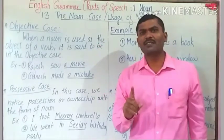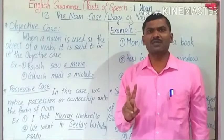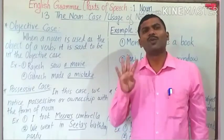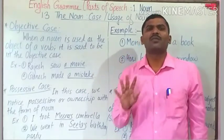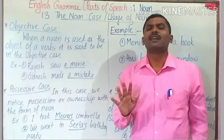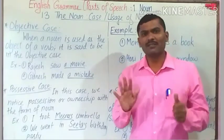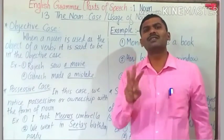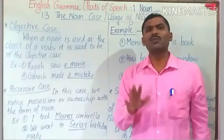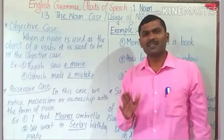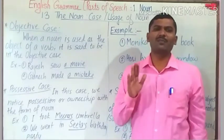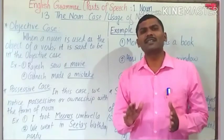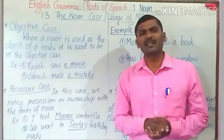The six cases are: first, nominative case; second, objective case; third, possessive case; fourth, dative case; fifth, ablative case; and sixth, vocative case. But out of these six cases, only three cases are more important: nominative case, objective case, and possessive case. These we mostly use while writing and speaking in English.